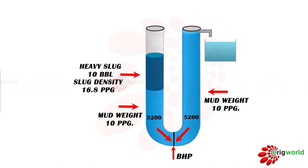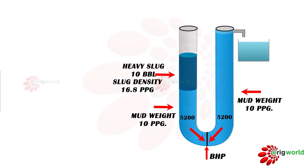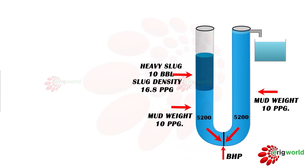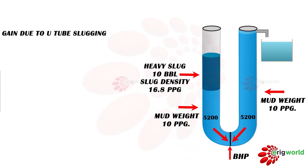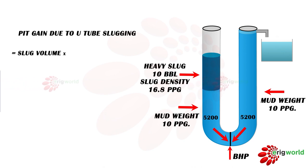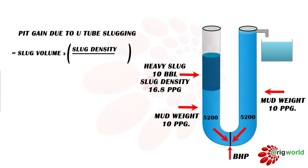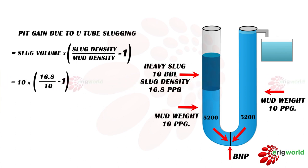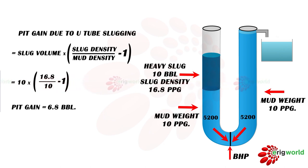Let's calculate the pit gain due to U-tube slugging. The formula used is: slug volume multiplied by slug density, divided by mud density, minus 1. Inputting all the given values and solving the equation, the pit gain is calculated as 6.8 barrels.